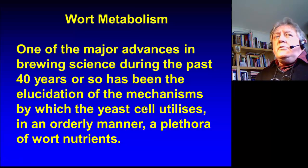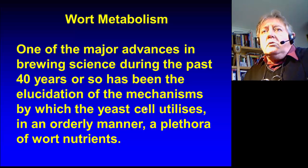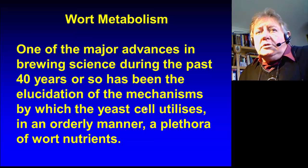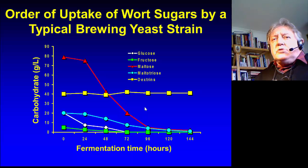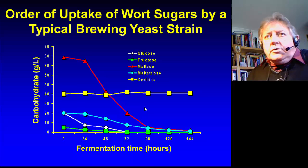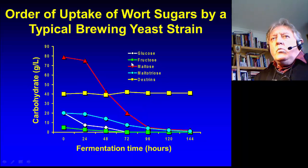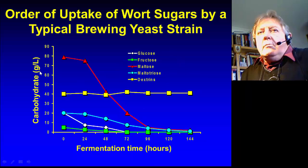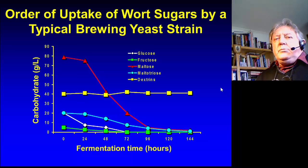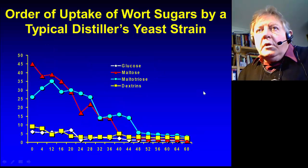One of the major advances in brewing science during the past 40 years or so has been the elucidation of the mechanisms by which the yeast cell utilizes the plethora of wort nutrients. The order of wort sugar uptake by a typical brewing yeast strain is in a set sequence. Glucose and fructose are taken up first. Once about 60% of the wort sugars are taken up, the uptake of maltose and maltotriose begins. The dextrins — maltotetraose and larger sugars — are not taken up at all and go through into the final product.